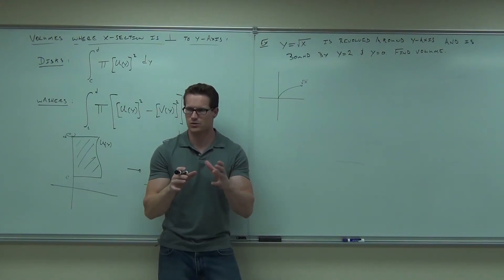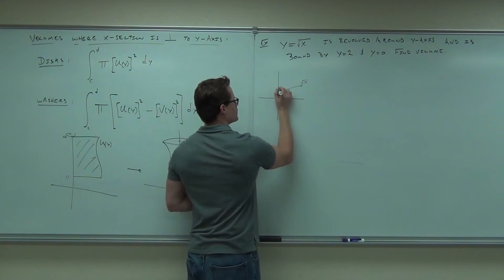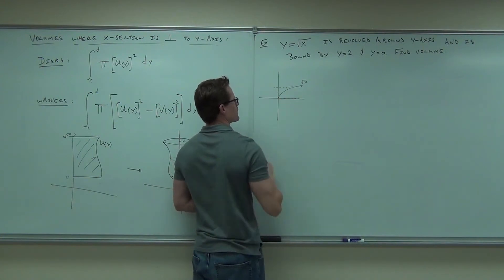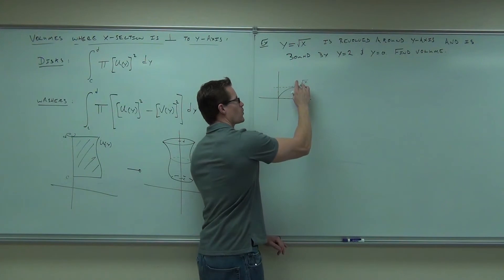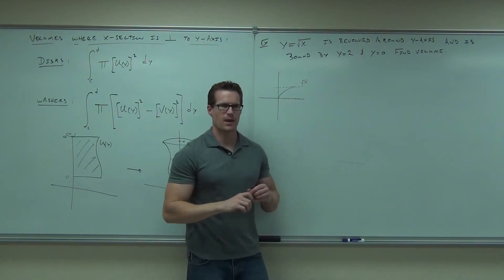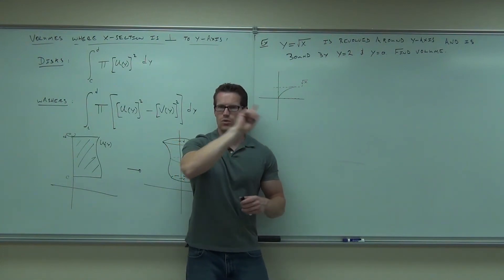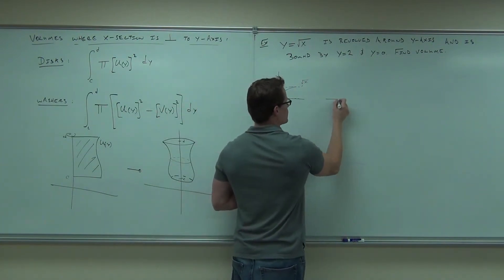Remember, y equals a constant equals a horizontal line. So what this says is, when you go up to 2, it's bound by this. And it's bound by this. This is y equals 2 and y equals 0. So essentially, I'm not worrying about this piece of the graph. I'm just worrying about this piece. Now, here's the problem. Am I going this way or this way? It says around the y, so I'm basically taking this shape and making this out of it.